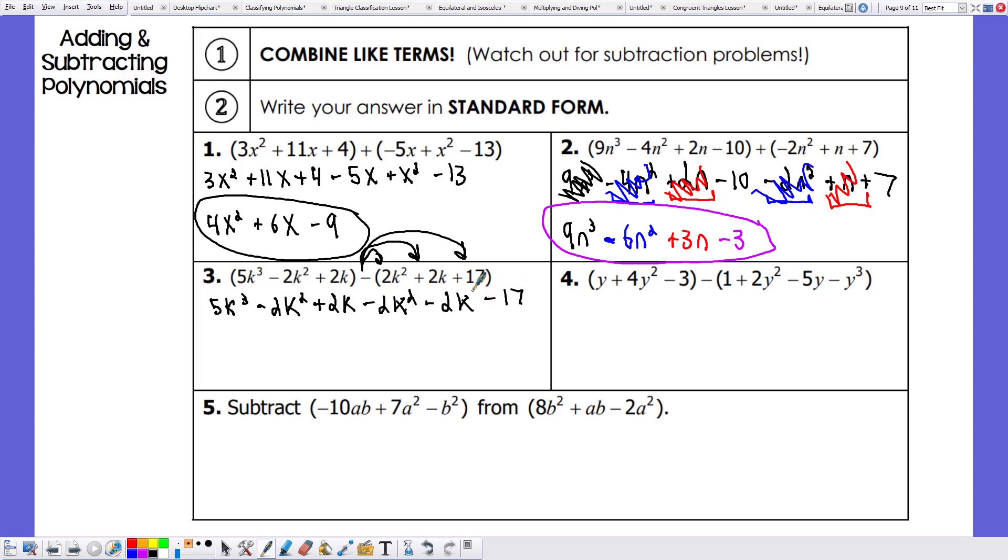Again, I only have one term raised to the third power, 5k to the third. So let's ignore that. Then let's work on our k squareds. Negative 2k squared minus 2k squared. Well, negative 2 minus 2 is a negative 4k squared. We can cross those out. Then we have 2k minus 2k. 2 minus 2 being 0, so they'll actually cancel themselves out. And finally, we are left with a negative 17.